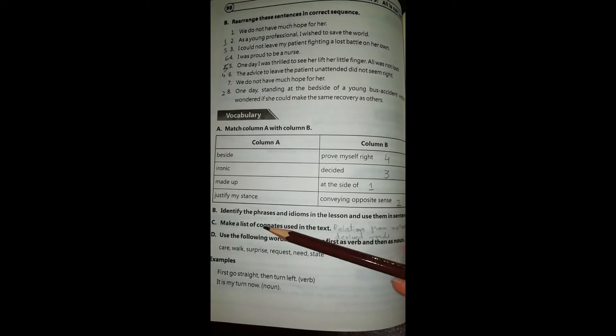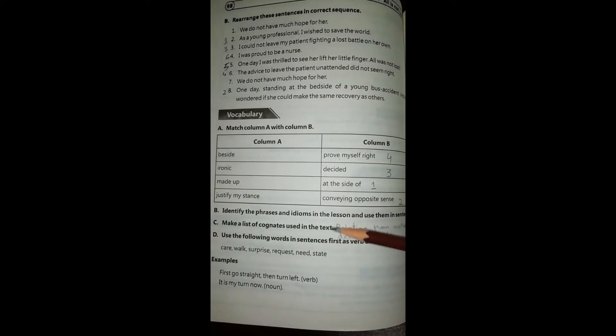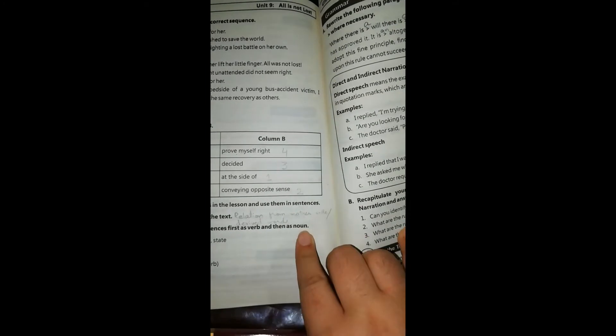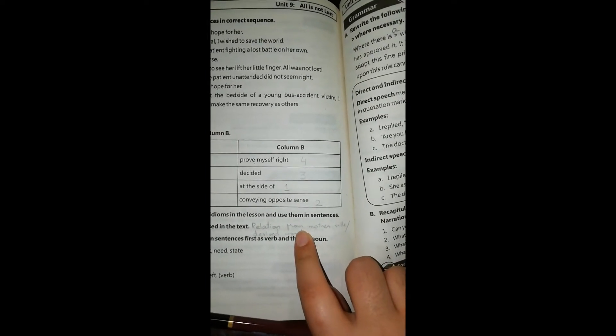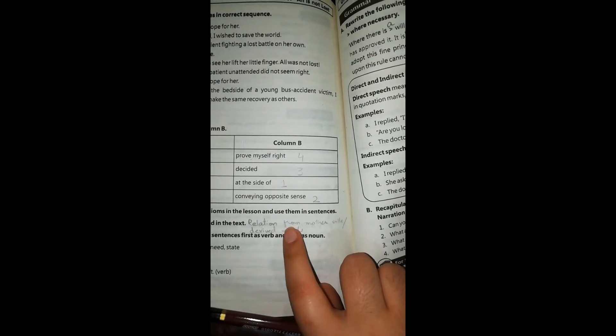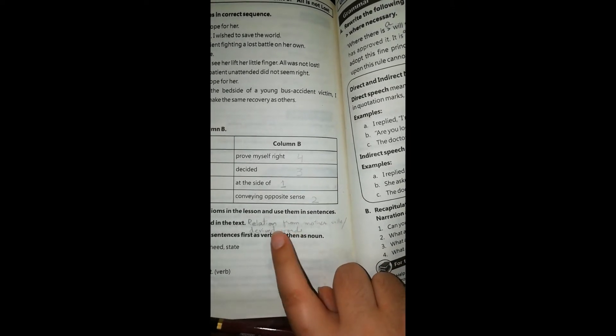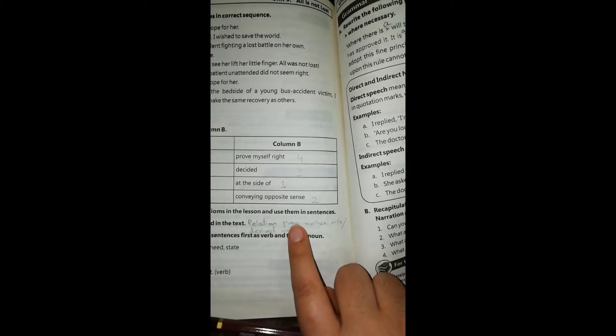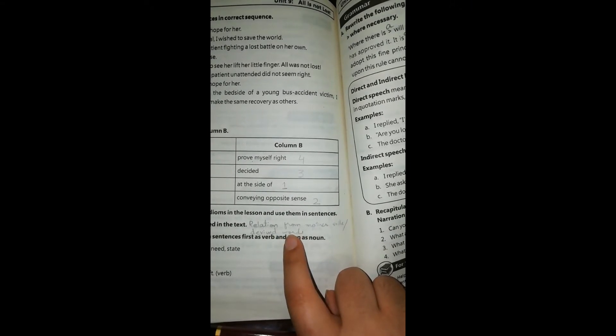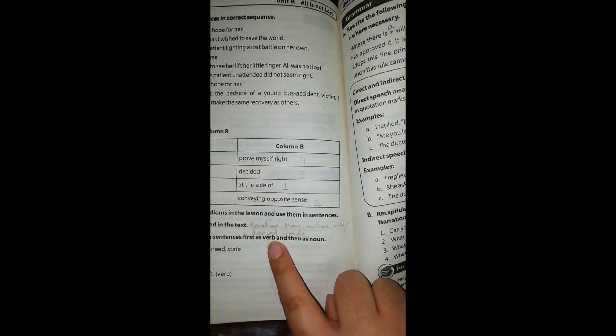Next we have to make a list of cognates used in the text. Cognates have two meanings. One is relations from mother's side. As it is concerned with this first concept, we have only a single relation mentioned in the text, that is hero's sister. Then derived words: cognates are derived words that are interlinked with each other. Suppose compare and comparison are cognates. Then we have compose and composition, they're also cognates. You have to find these words on your own. This is your own task.